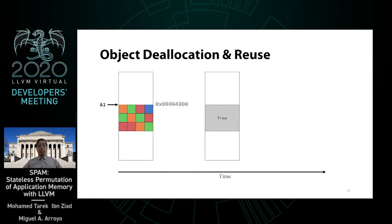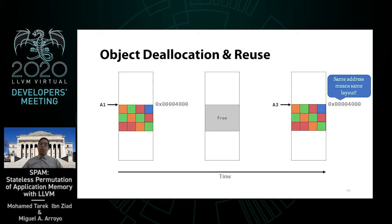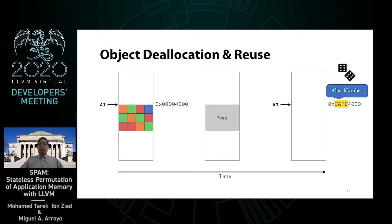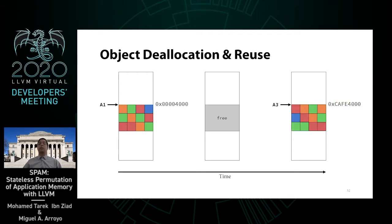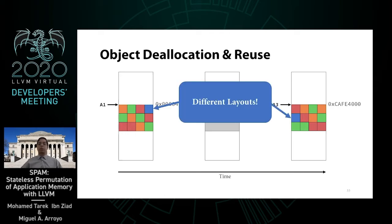For performance reasons, memory that is recently freed is often reused, meaning the same virtual address will be assigned to a new object. Using the same address for the new object means having the same permuted layout, which may leave us vulnerable to use-after-free attacks. To avoid this, we generate a random number called the alias number upon object allocation, then use the alias number to tag the most significant bits of the allocation address. For example, we use 0xcafe as an alias number for allocation A3. As every object instance gets its own alias number, each object will have its own permutation, avoiding use-after-free issues without introducing any metadata.